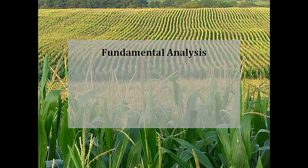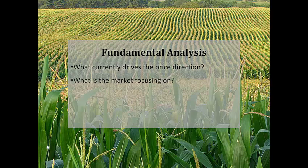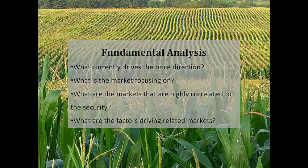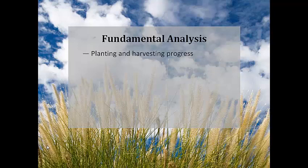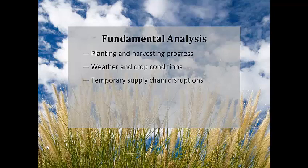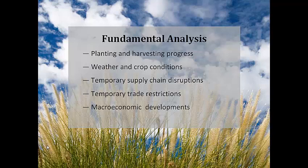With the big picture of supply, demand and seasonality in mind, there are still many fundamental factors that will determine short-term fluctuations in prices. As a start, we should always ask ourselves: What currently drives the price direction? What is the market focusing on? What are the markets highly correlated to the security? What are the factors driving related markets? For agricultural commodities such as corn, the answer can often be found in: the pace and progress of planting and harvesting activities; beneficial and adverse weather conditions which affect crop conditions; temporary supply chain disruptions; temporary trade restrictions; developments in the macroeconomic environment; and investor perceptions and positions taken by commodity funds.